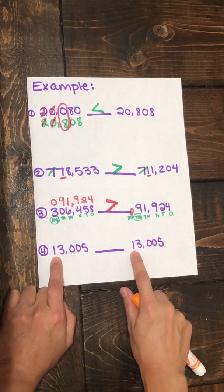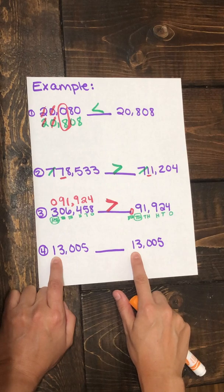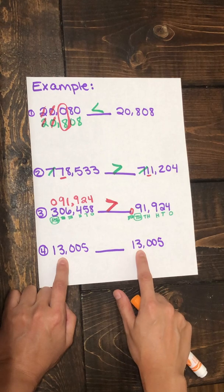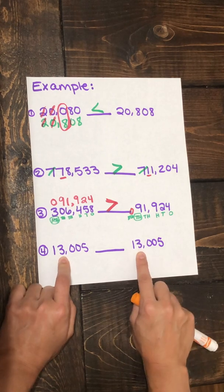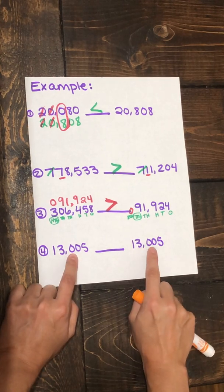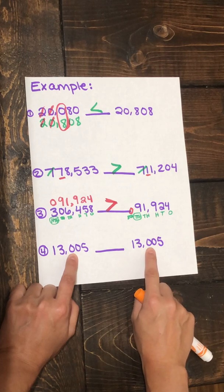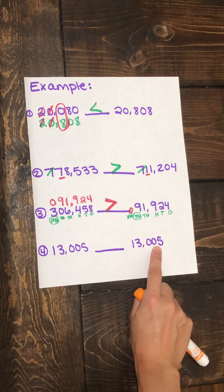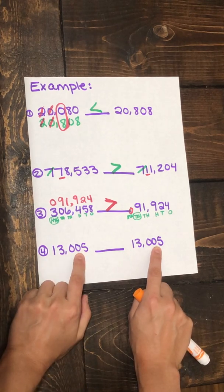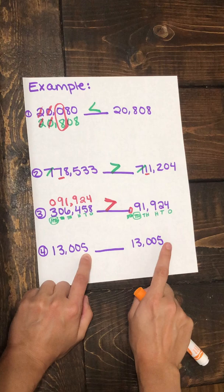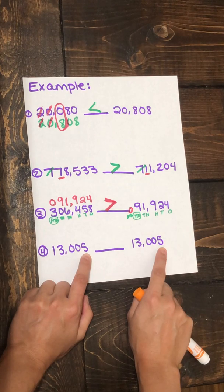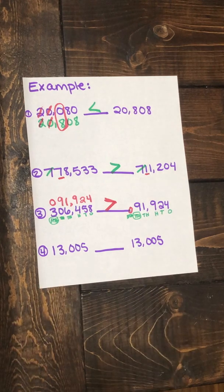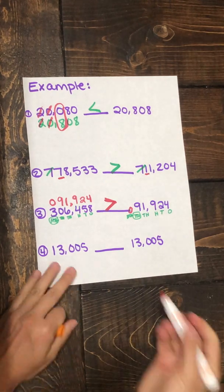So we have a one and a one in the ten thousands place. We have a three and a three in the thousands place. That doesn't help us yet. We have a zero and a zero in the hundreds place. We have a zero and a zero in the tens place. We still don't know. And we have a five and a five in the ones place. So we checked every number and they are the same. That must mean that these two numbers are equal.